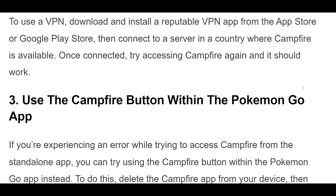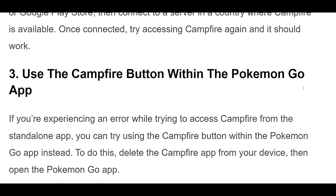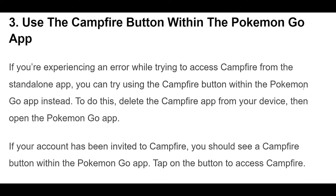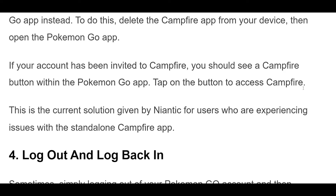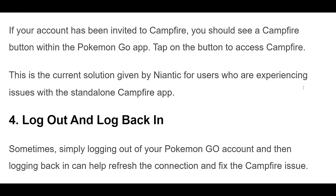If you're experiencing an error while trying to access Campfire from the standalone app, you can try using the Campfire button within the Pokemon Go app instead. To do this, delete the Campfire app from your device, then open the Pokemon Go app. If your account has been invited to Campfire, you should see a Campfire button within the Pokemon Go app. Tap on the button to access Campfire. This is the current solution given by Niantic for users experiencing issues with the standalone Campfire app.